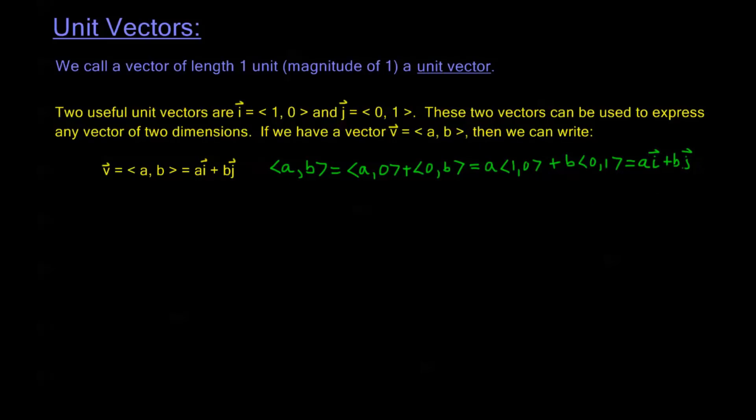So this is why we can write any vector in this form AI plus BJ, where we just take the horizontal and vertical components and turn them into scalars for those unit vectors I and J. Let's see some examples on how we can use this.